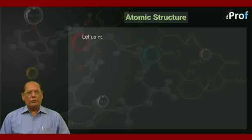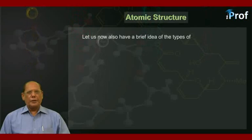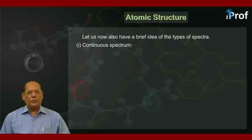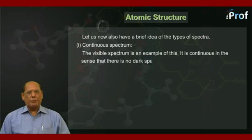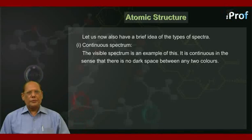Let us now also have a brief idea of the types of spectra. First, continuous spectrum. The visible spectrum is an example of this. It is continuous in the sense that there is no dark space between any two colors.